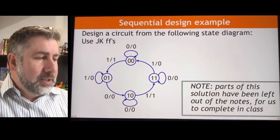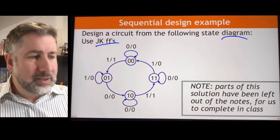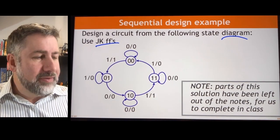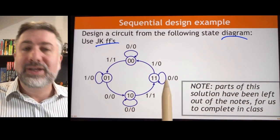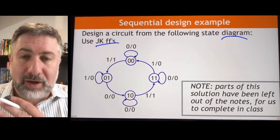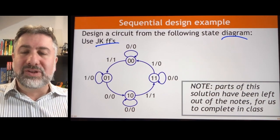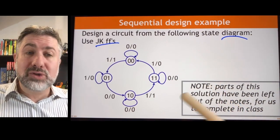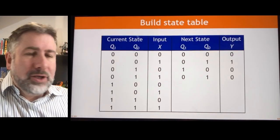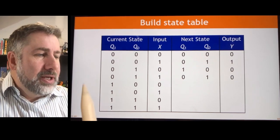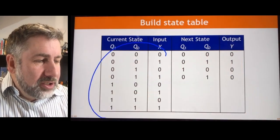Here is a state diagram. Use JK flip-flops to generate a circuit that will execute this sequence. If I'm in state 0 and I get a 0, I want to stay in state 0. If I'm in state 1,0 and I get a 1, I want to go to state 1,1. This tells me, exhaustively, for every possible state and every possible input, what the next state should be and what the output should be. So you start by building out a state table or characteristic table: given the current state and the inputs, what is the next state and the outputs?